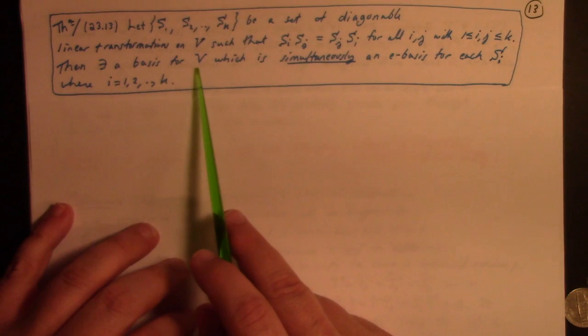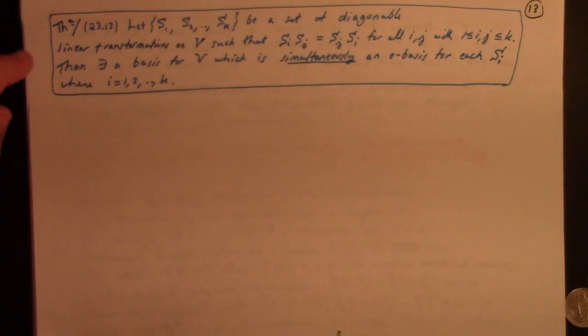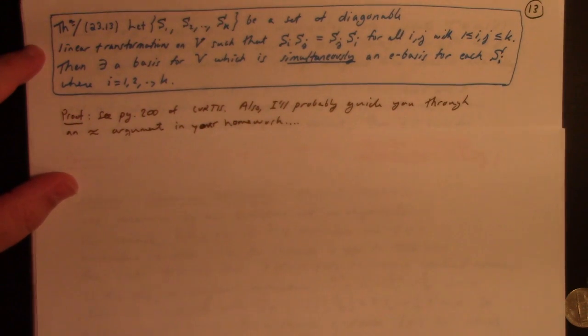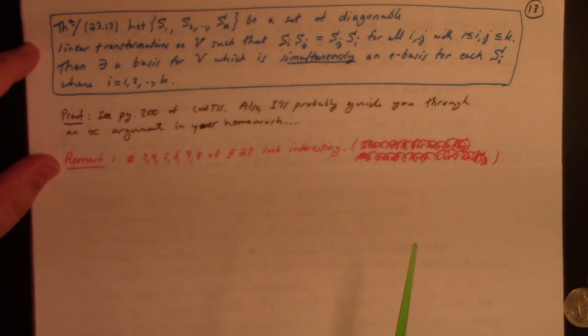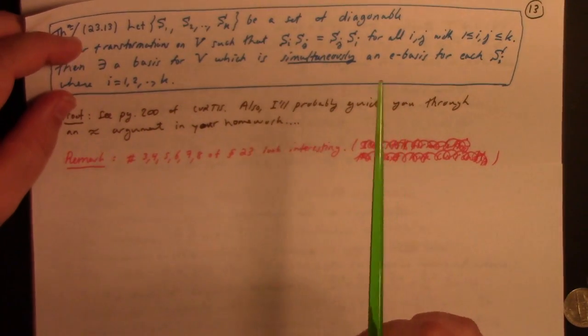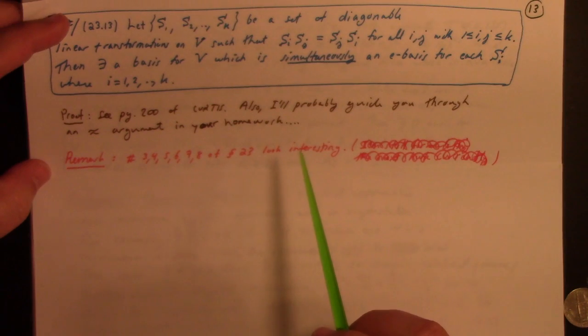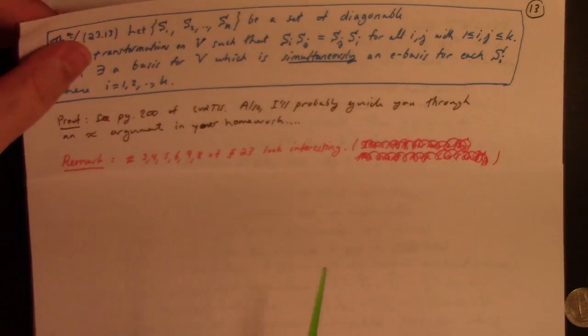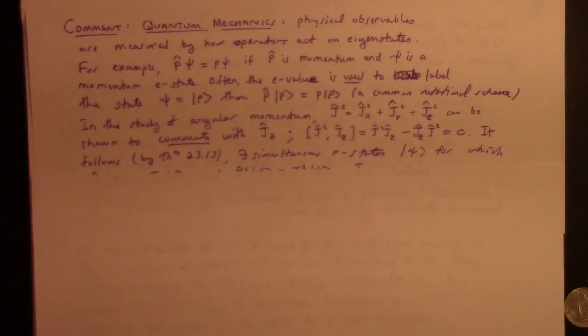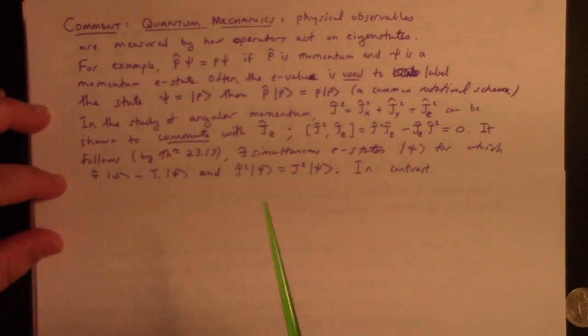Then, there exists a basis for V, which is simultaneously an eigenbasis for each SI all at once. I mean, that's what simultaneous means, of course. Page 200 of Curtis, I say I'll probably guide you through an argument. In your homework, I don't think that's entirely true. I have invited you to work it out. I have a book which has a number of exercises which will guide you through it. I have assigned it as a bonus exercise. In some previous year, I can't find my solution just yet. I don't remember it being particularly easy. But, anyway, it is one of the more interesting results.